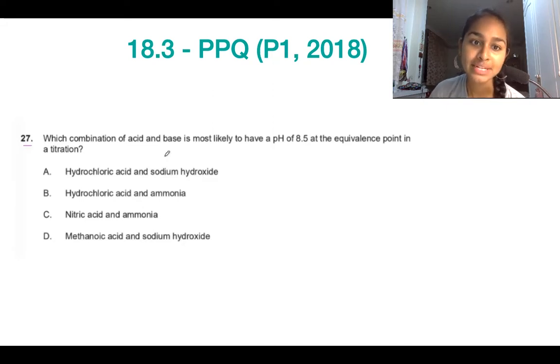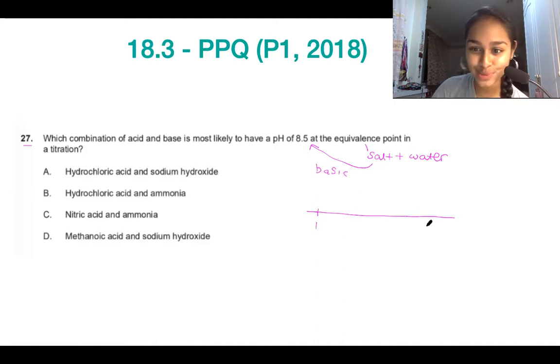Which combination of acid and base is most likely to have a pH of 8.5 at the equivalence point? Remember, at the equivalence point, all the acid has been neutralized by the base. At this point we've only got salt and water, and they are asking us for which salt is going to be basic. If you always think about it as a tug of war, which is the method that I recommended in my previous video, you're always looking for the midpoint.